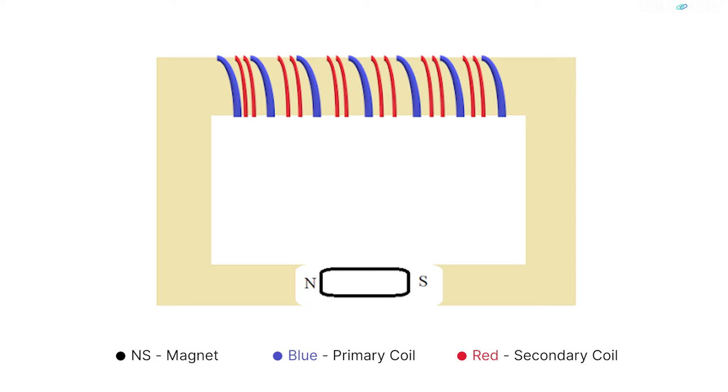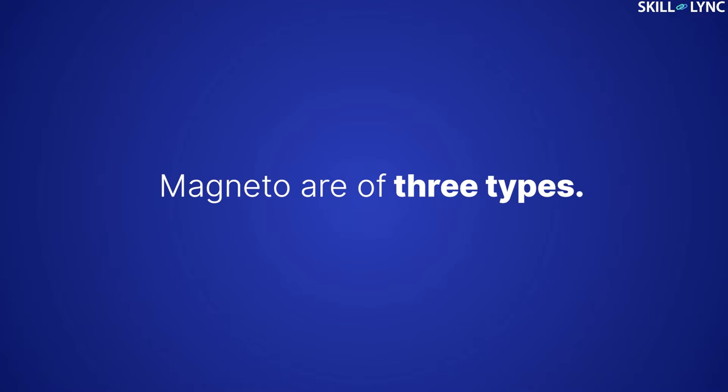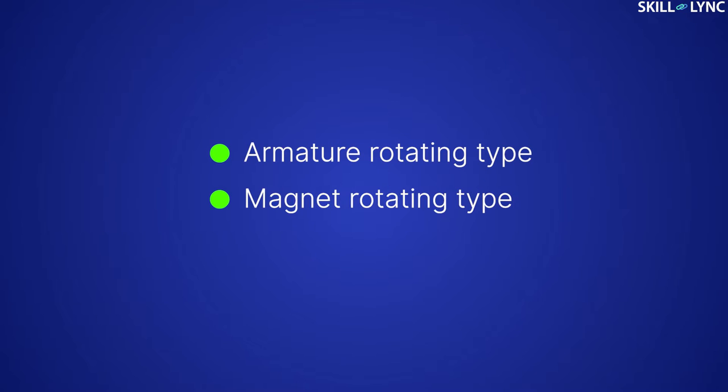The magneto consists of a permanent magnet. It also has primary and secondary windings wound on it. Magnetos are of three types: an armature rotating type, a magnet rotating type, and a polar inductor type.